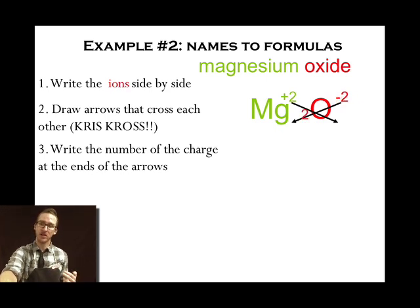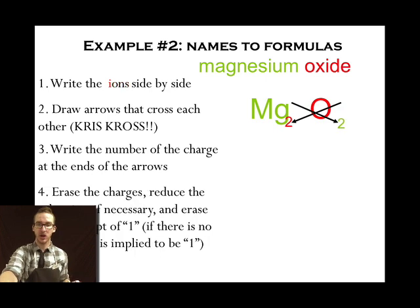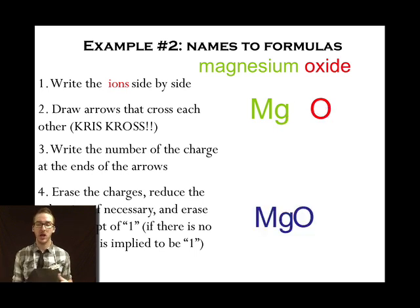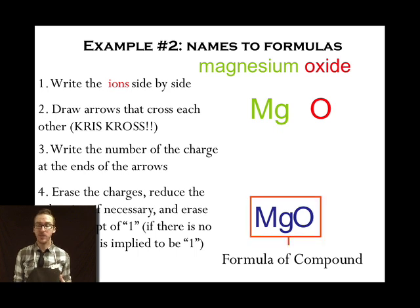Again I'm just taking the numerical value, not the positive and minus sign. I'm gonna erase the charges, reduce the subscripts if necessary, and erase any subscript of one. As I look at this example, recognize that my subscripts can be reduced. Instead of two to two, I can simply write it as one-to-one. So my final formula here is MgO. I just need a single magnesium ion and a single oxide ion to reach an overall neutral charge for my formula unit.